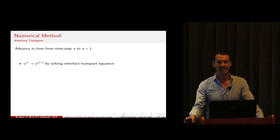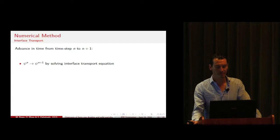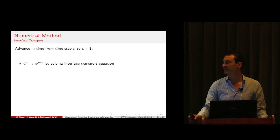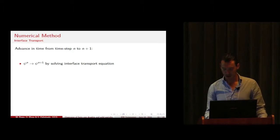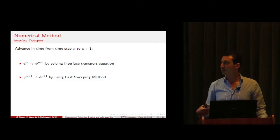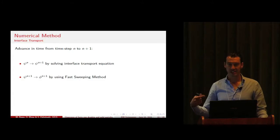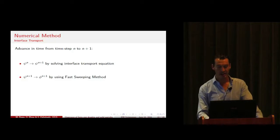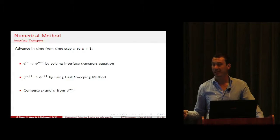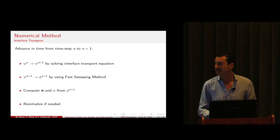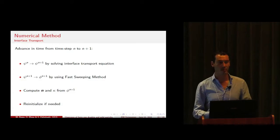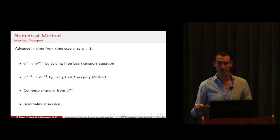To summarize the solution procedure from one step to the next, we first solve the interface transport equation. We then use a fast sweeping method to compute the signed distance function at the next time level, and from that we obtain the normals and the curvature, and eventually we reinitialize the phase field function if the hyperbolic tangent profile is too disrupted.